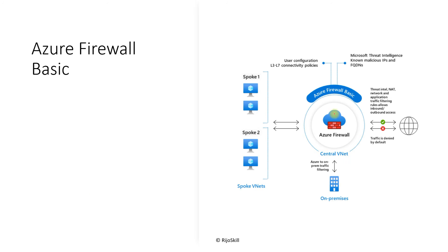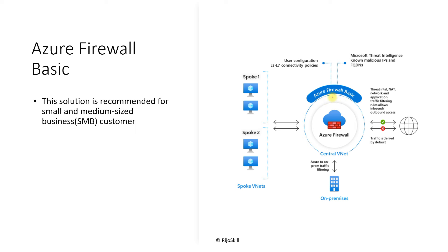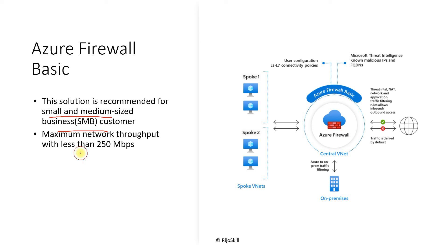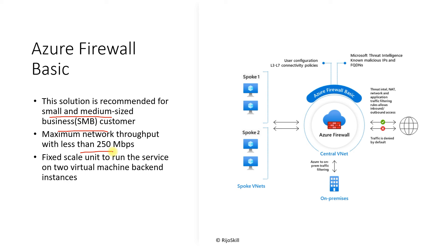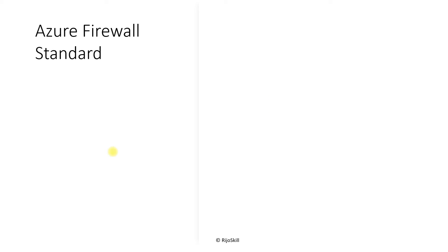The Basic tier is recommended for small and medium-sized business customers. It provides a maximum throughput of 250 Mbps and uses a fixed scaling unit, supporting only two virtual machine backends.